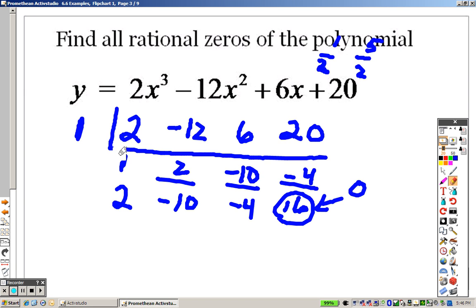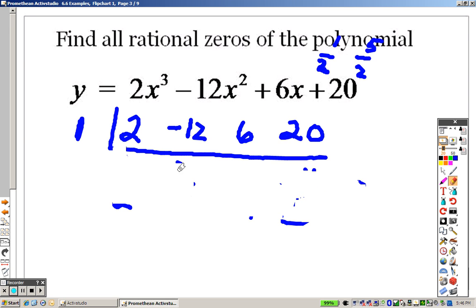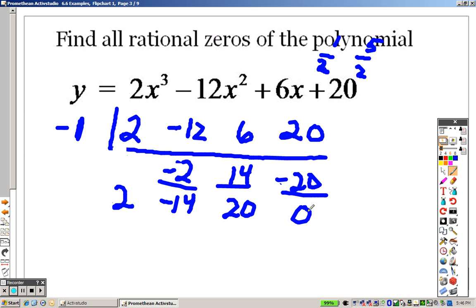So right now, here's what I know. I know that 1 doesn't work. But just because positive 1 didn't work, that certainly doesn't mean that negative 1 won't work. So I bring down the 2. 2 times negative 1 is negative 2. Add them together to get negative 14. Negative 14 times negative 1 is positive 14. Add them together to get 20. 20 times negative 1 is negative 20. Oh, look, I got 0. So I found one that works. I started out at the beginning, and I figured out that negative 1 works.